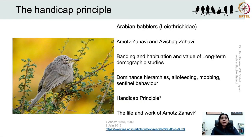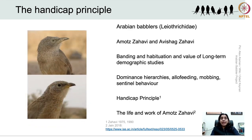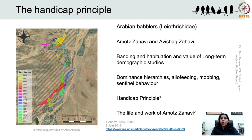One of the most well-studied cooperatively breeding bird species is the Arabian babbler. Israeli scientist Professor Amotz Zahavi established the Arabian babbler project in the middle of the Arava desert in Israel in 1971. Over the last 50 years or so, Amotz, along with his lifelong collaborator and wife Avishag Zahavi, conducted research on the Arabian babblers with researchers from all over the world. Male and female babblers look alike except that males have a yellow iris while females have completely black irises. Zahavi and researchers painstakingly marked and mapped territories of individual groups.